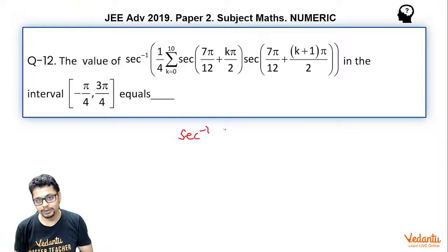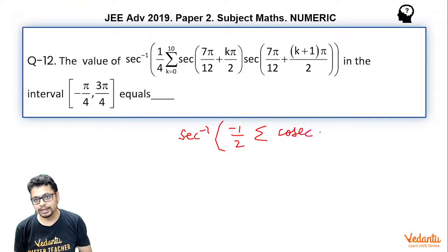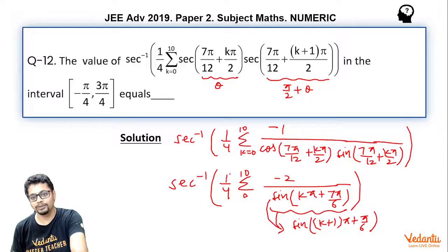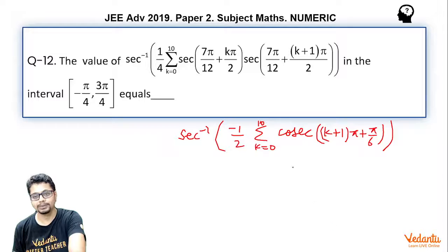As sec inverse minus 1 by 2 sigma cosec k plus 1 pi plus pi by 6. K varying from 0 to 10. Let's check it out. Sec inverse minus 2 by 4 becomes minus half sigma k equal to 0 to 10, 1 by sine is cosec. So, cosec k plus 1 pi plus pi by 6.